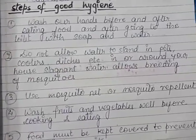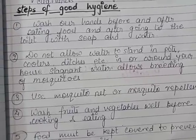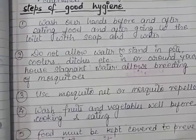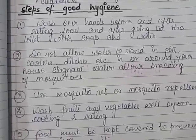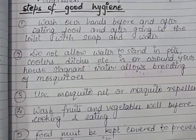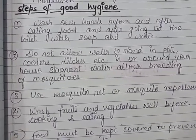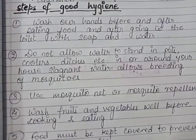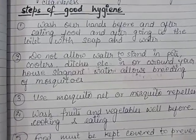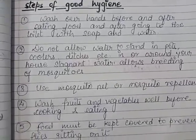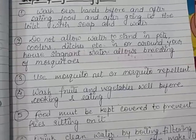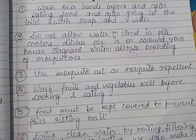Mosquitoes easily develop their larvae in stagnant water. So we must drain this stagnant water. That is why we can prevent ourselves and our surroundings from the spread of malaria. The next step is the use of mosquito nets and mosquito repellents, like Good Night and similar products, which you all use at home.